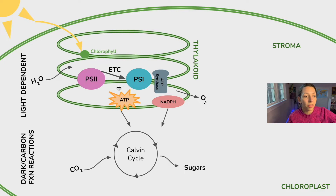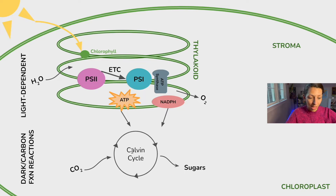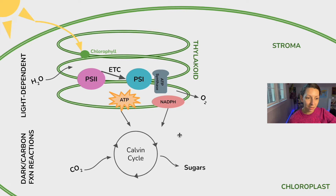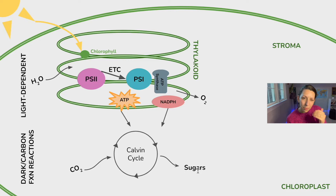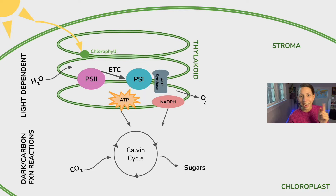Your teacher may go into more detail about the different protein complexes or what's happening with the electrons. But it's really important to know that at the end of the light-dependent reactions, we have ATP and NADPH to power the dark reactions or carbon fixation reactions that happen outside the thylakoid in the stroma of the chloroplast. These reactions are part of a cycle called the Calvin cycle. In the Calvin cycle, carbon dioxide enters, and eventually, with the help of ATP and NADPH, sugars are produced. In AP biology, you do not need to memorize the steps of the Calvin cycle, but you do need to know what goes in and what comes out. These sugars contain carbon, which comes directly from carbon dioxide that enters the carbon cycle.